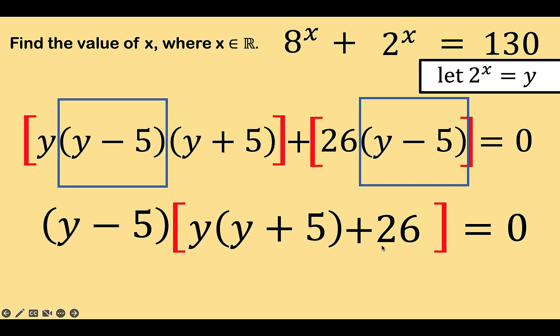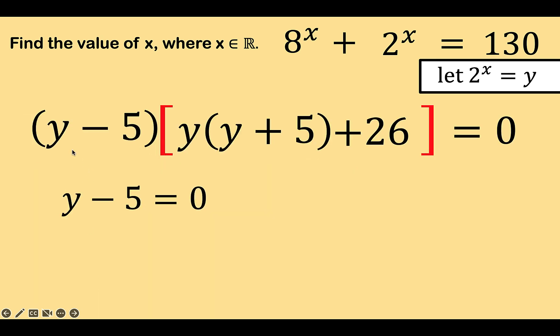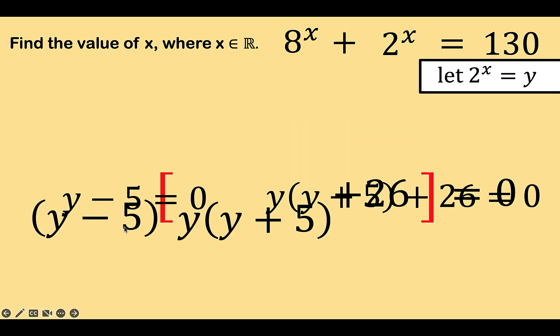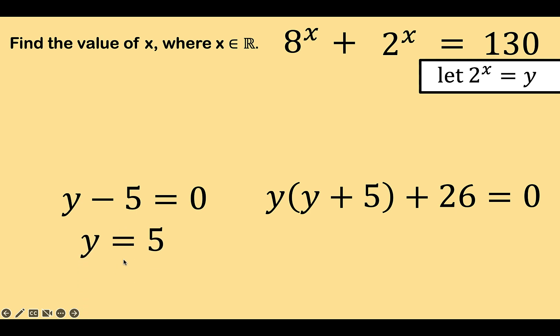Notice now that we have here two factors and the product is equal to 0. That means we can now equate the first factor y minus 5 to 0 and equate the second factor y times the quantity y plus 5 plus 26 equals 0. For this equation at the left side, we know that y is equal to 5. Let's remember this value because we are going to substitute that in our previous substitution.